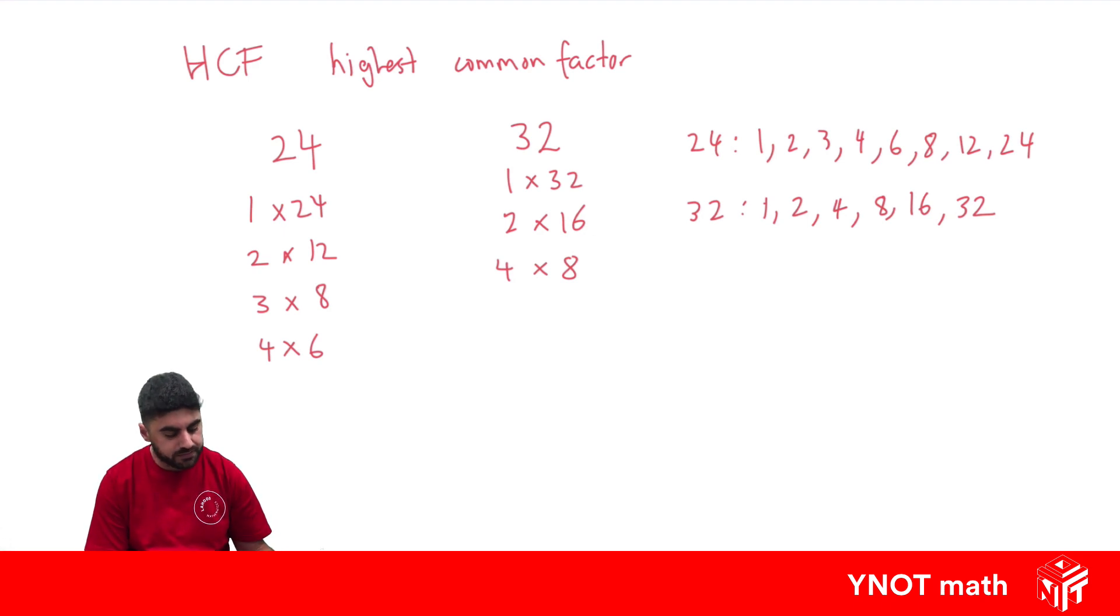The Highest Common Factor is a factor that appears in both but it's the highest number. So 1 appears in both, it's a common factor but it's not the highest. There's also 4 which is common but still not the highest. The highest number that appears in both is 8. So 8 is the highest common factor of 24 and 32.